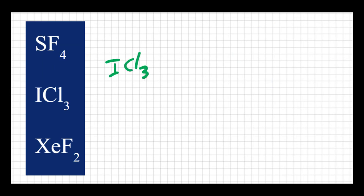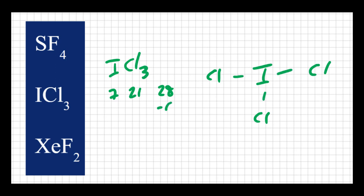For ICl3: iodine is a halogen with seven valence electrons, and chlorine is also a halogen with seven, so that's 28 electrons total. With iodine in the middle and three chlorines bonded to it, I used six electrons, leaving 22. Putting six electrons around each chlorine uses 18, leaving four electrons. Both chlorine and iodine can expand their octets, but it's more stable to put the extra electrons on the central atom. So I put the remaining four electrons on the iodine, giving five sites around the central atom — three bonds and two lone pairs.